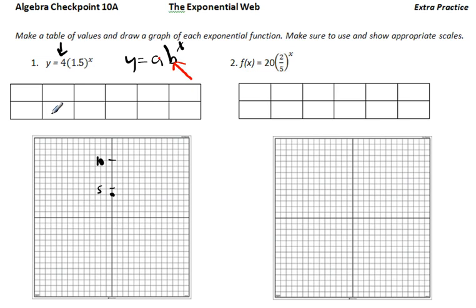Let's just plug in some points. I know because this number is bigger than 1, it's going to grow like this. So I'm going to get more points on the right side than on the left side. So I'd like to do negative 2, negative 1, 0, 1, 2, 3.